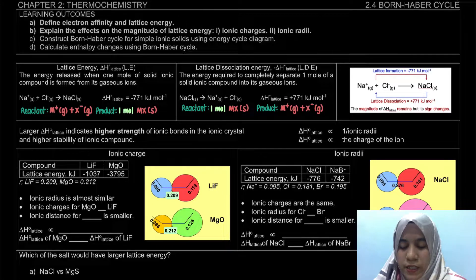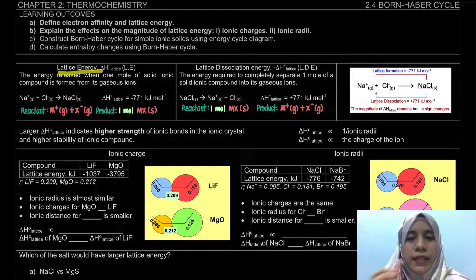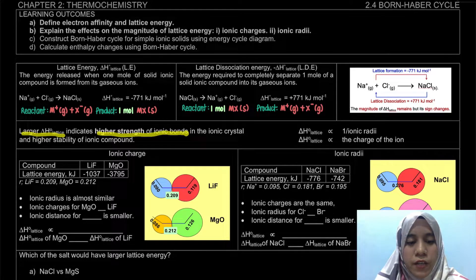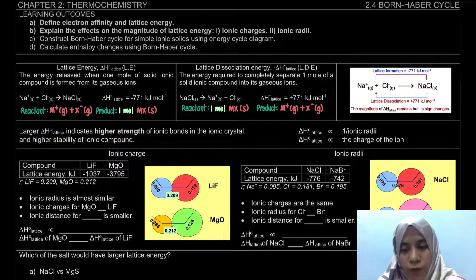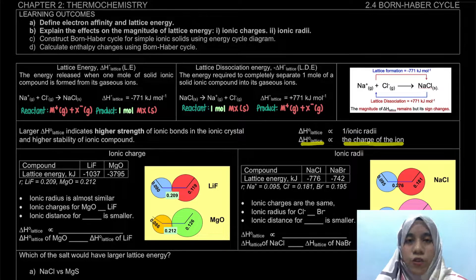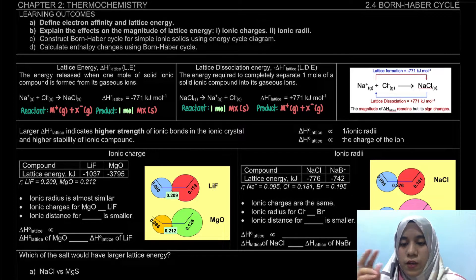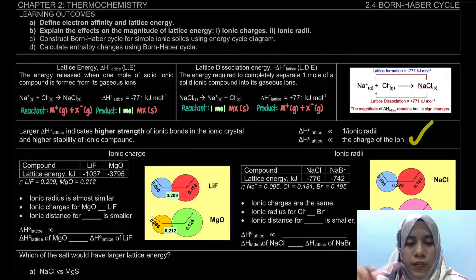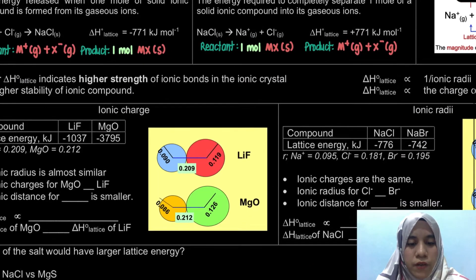Next, let's look at the factors affecting lattice energy. A larger lattice energy indicates a higher strength of ionic bond, and a higher strength of ionic bond means a higher stability of the ionic compound. Lattice energy is inversely proportional to ionic radii, but directly proportional to the charge of the ion. The two factors we will examine are ionic charge and ionic radii.